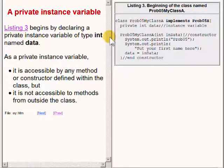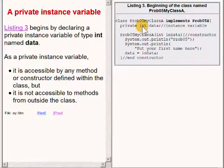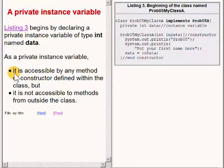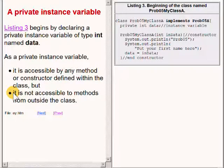This class definition begins by declaring a private instance variable of type int named data. As a private instance variable, it is accessible by any method or constructor defined within the class, but it is not accessible to methods from outside the class.